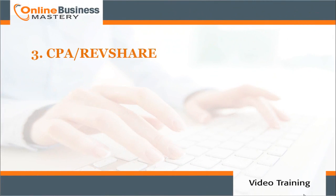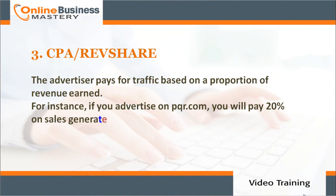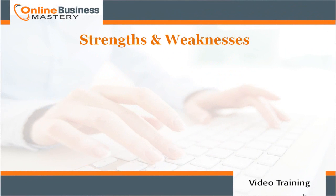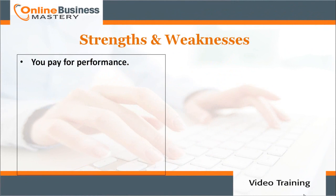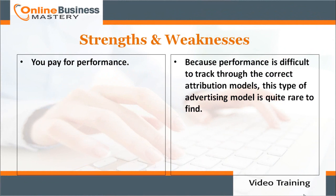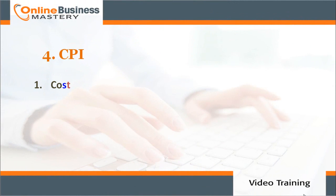Number three: CPA/rev share. The advertiser pays for traffic based on a proportion of revenue earned. For instance, if you advertise on pqr.com, you will pay twenty percent on sales generated from pqr.com's traffic. If no conversion or transaction occurs, you won't pay. Strength: you pay for performance. Weakness: because performance is difficult to track through correct attribution models, this type of advertising model is quite rare to find.